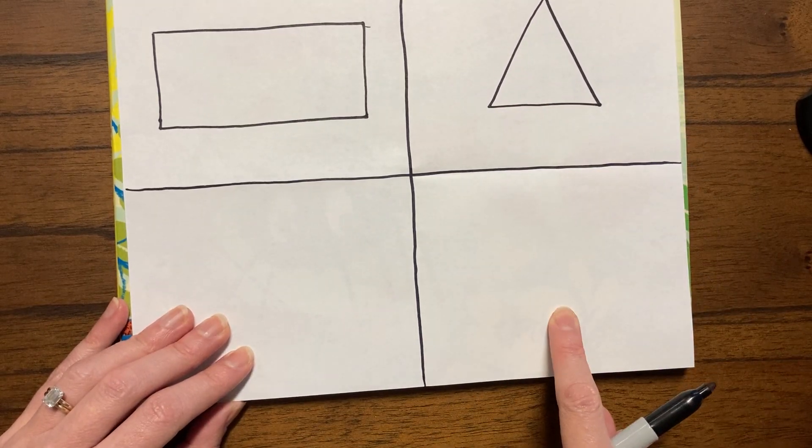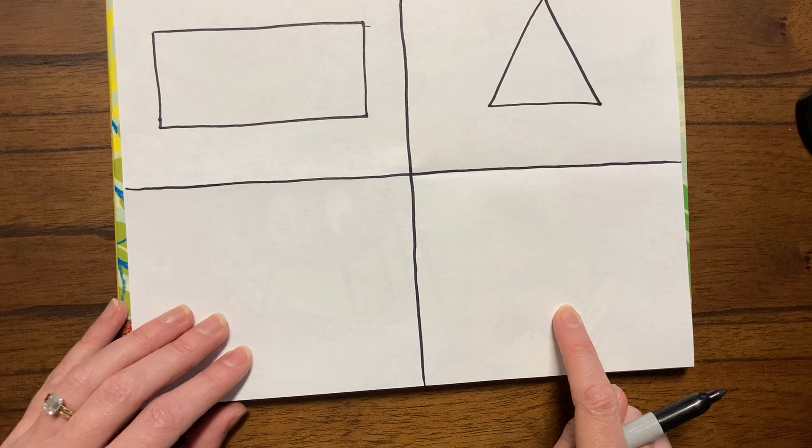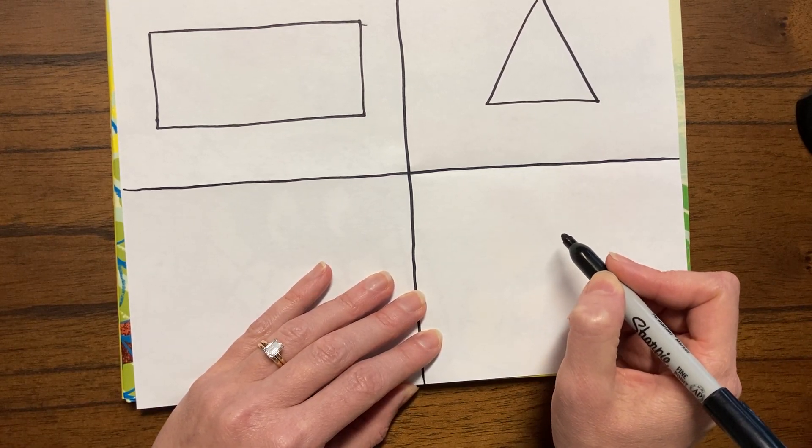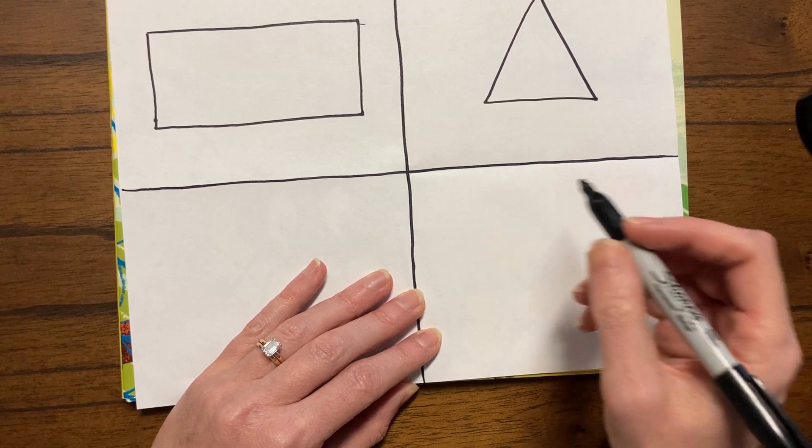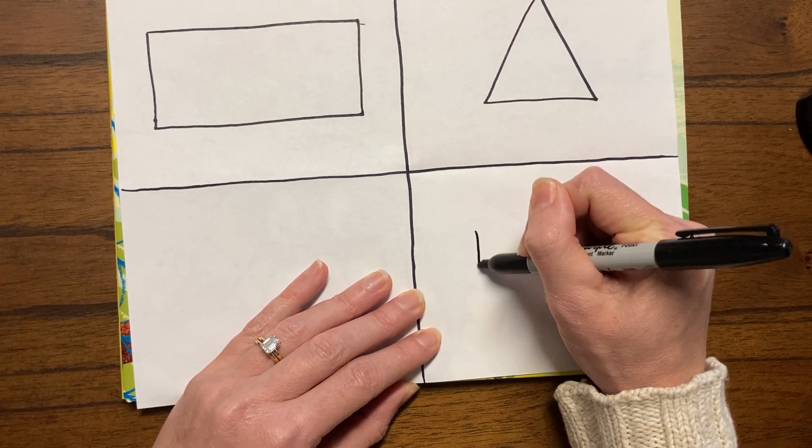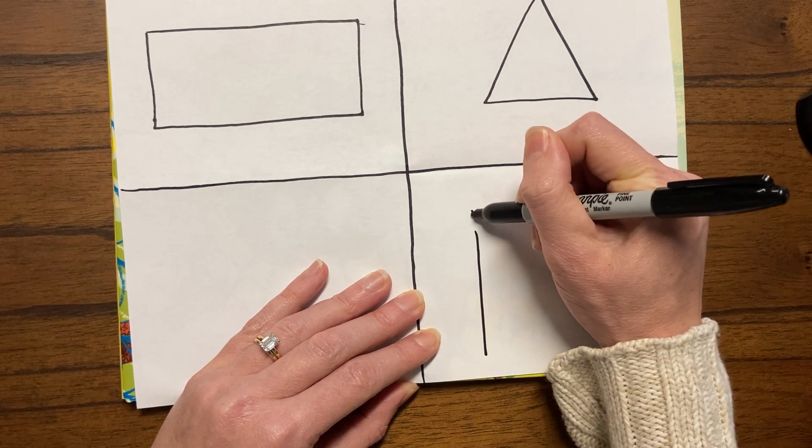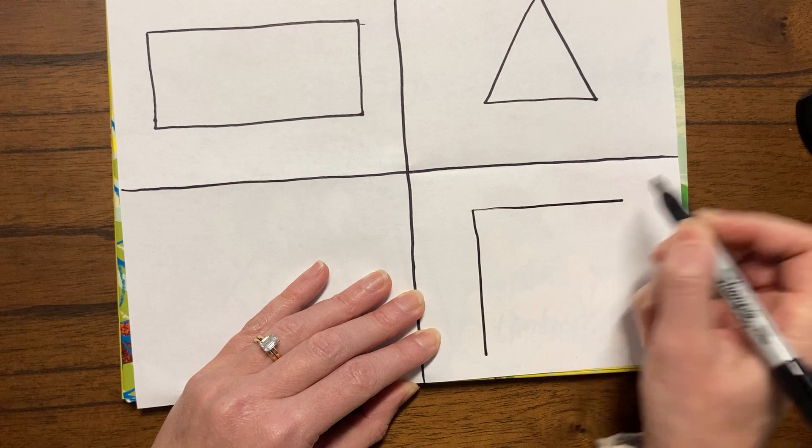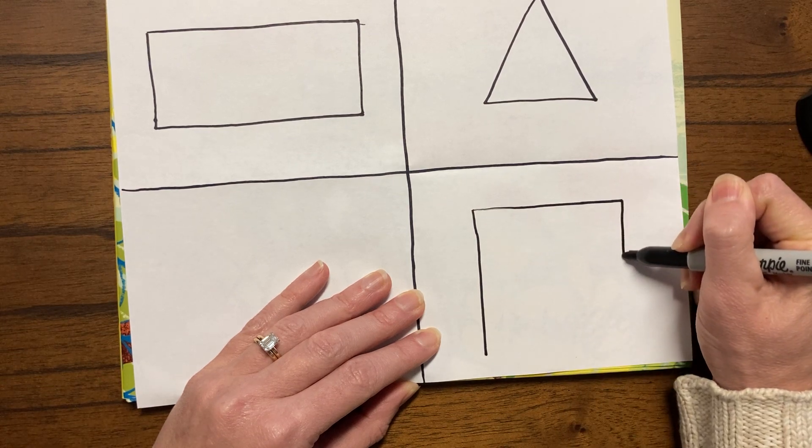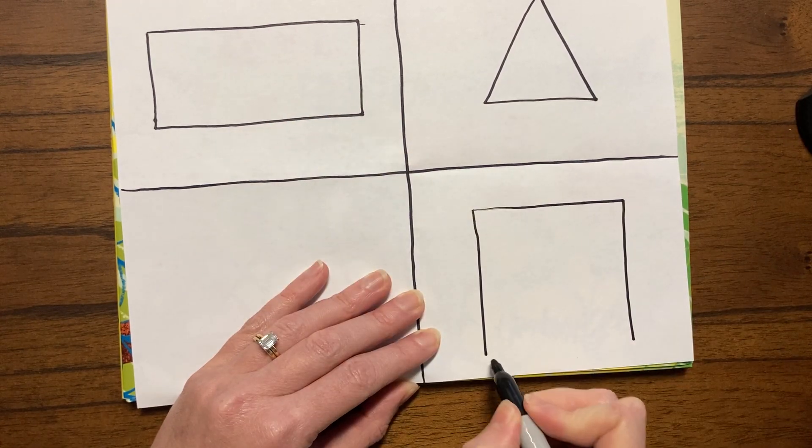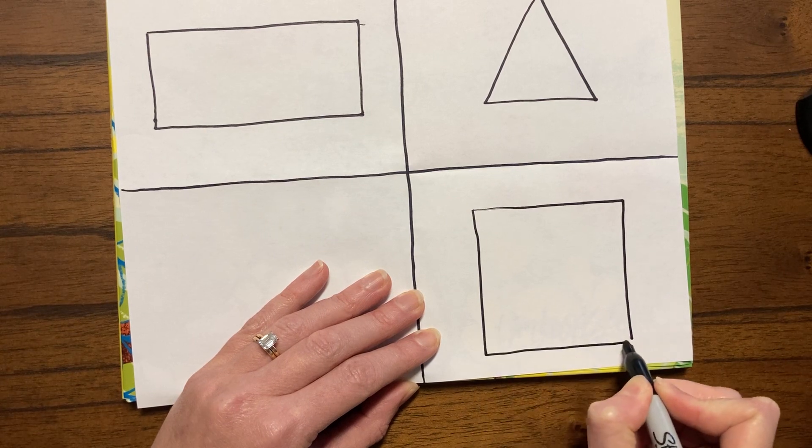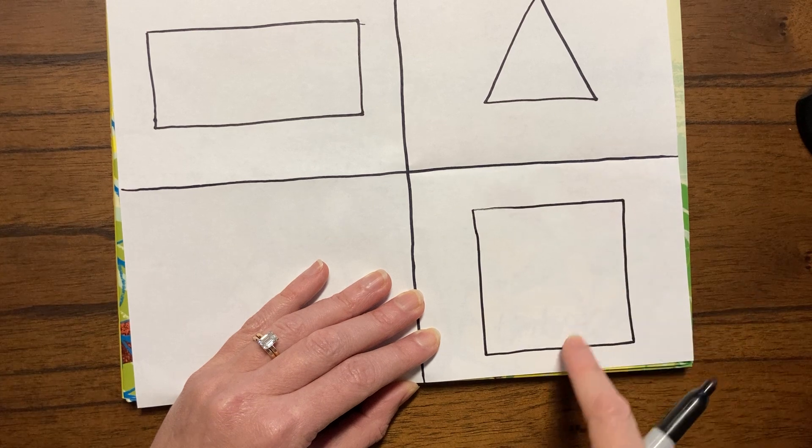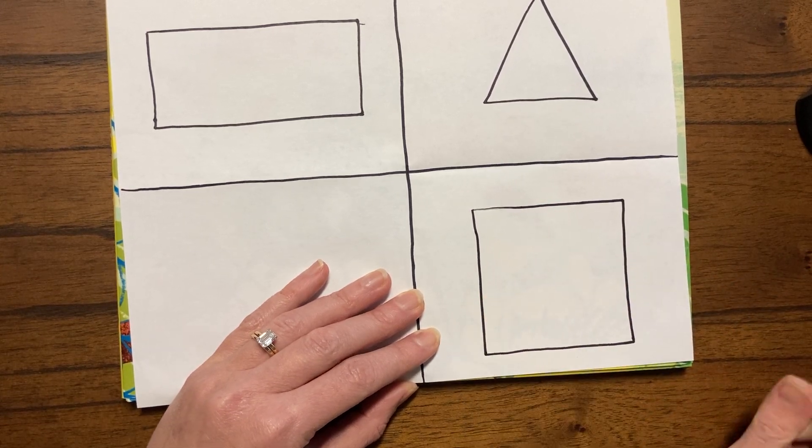Let's go right underneath the triangle. Let's draw a square. A square has four equal sides. So we want to try to make a nice big square. And we want these sides to be pretty equal. So unlike the rectangle, we want each of these lines to be as similar to the next as we can make them.